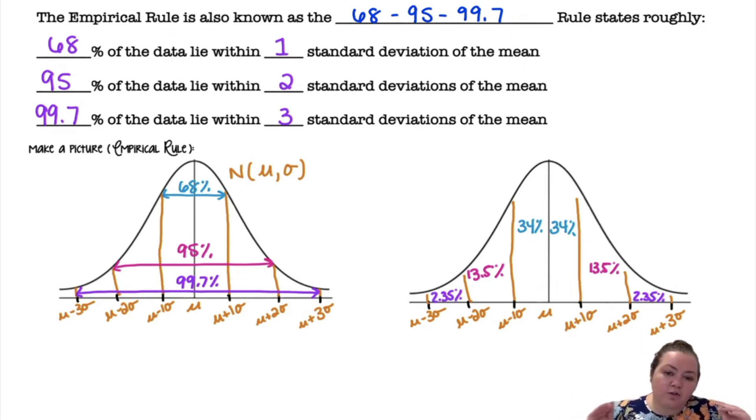And then under the curve I have a total of 100% because the area under any density curve is one. So 100% minus 99.7% divided by two gives me 0.15%. So now I have each section what percent falls in each little section.